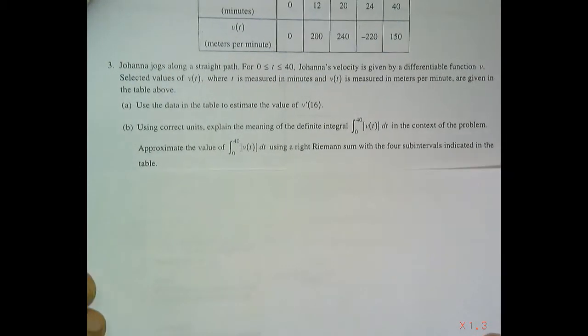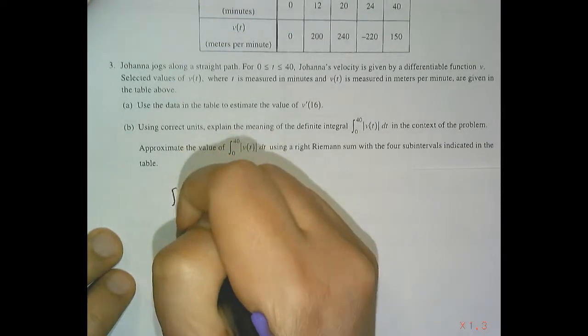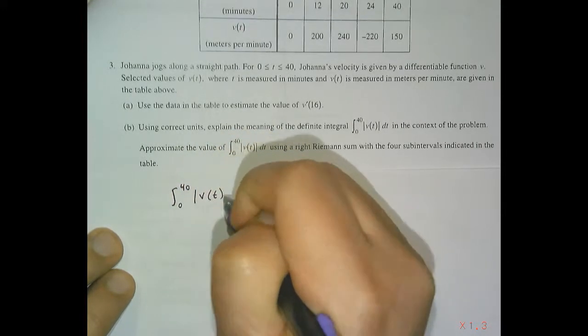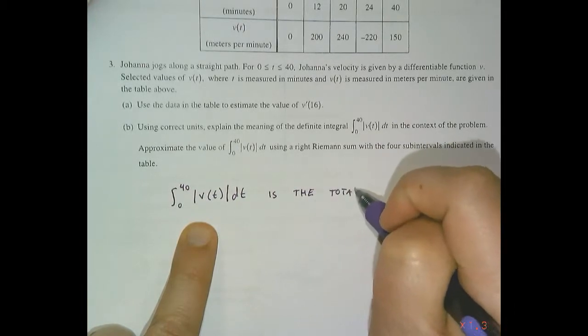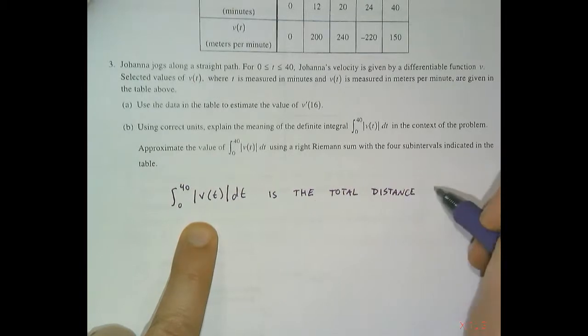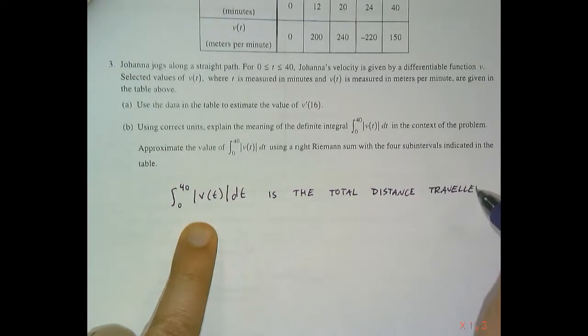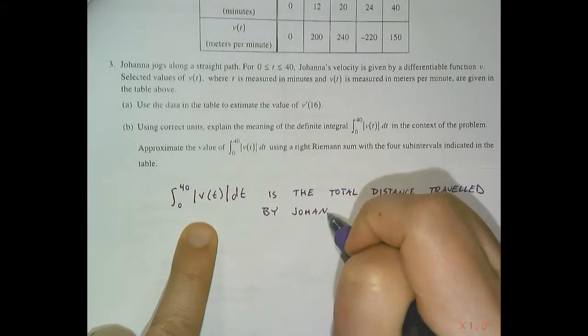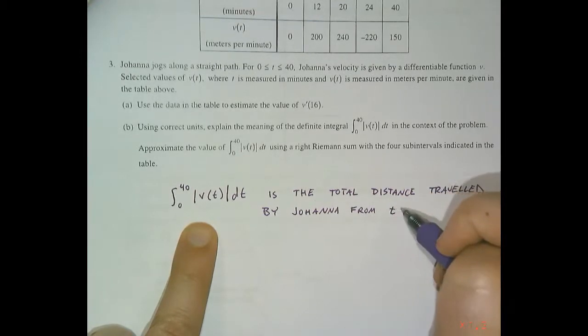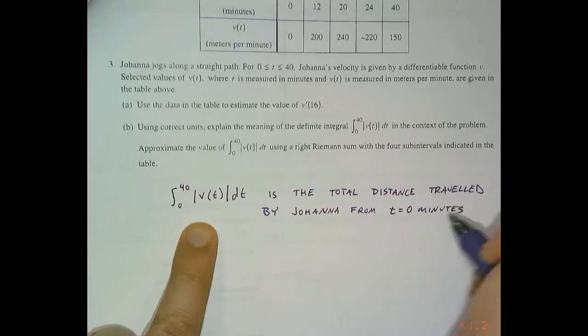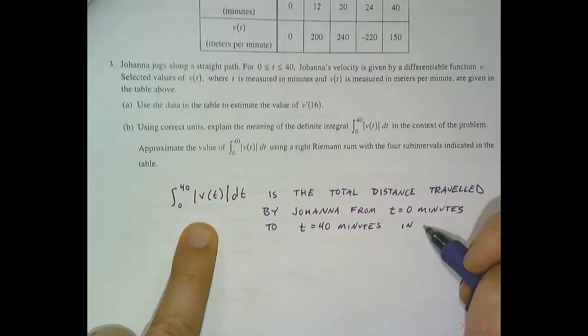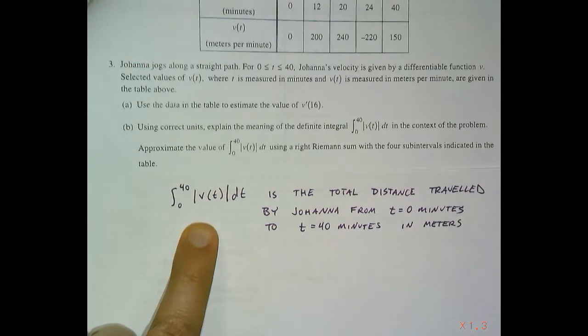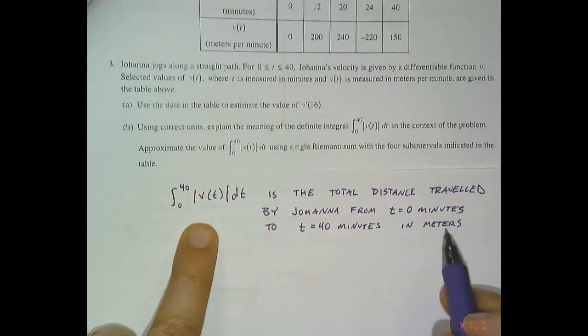Moving on to part B. Part B says using correct units explain the meaning of the integral 0 to 40 absolute value v of t dt. So this is the total distance traveled by Johanna from t equals 0 minutes to t equals 40 minutes in meters. What is happening? When is it happening? You have to include the units of minutes and you have to include the units of meters.